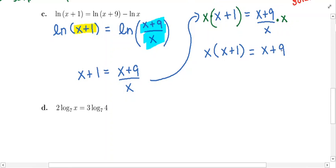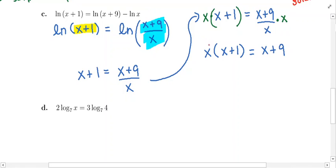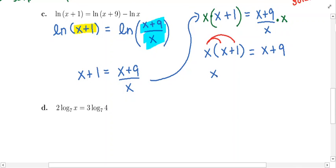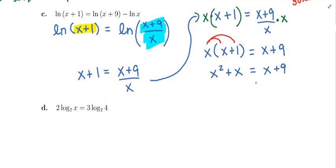Fractions are gone. Let's distribute and solve for x. On the left you get x squared plus x, equal to x plus 9. We need to solve this equation. The fractions are gone and it is quadratic — the highest power of x is 2. So we need to put everything on one side in order to use the quadratic formula or to factor.